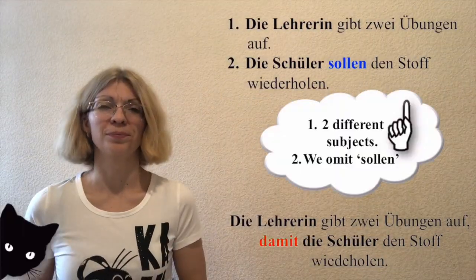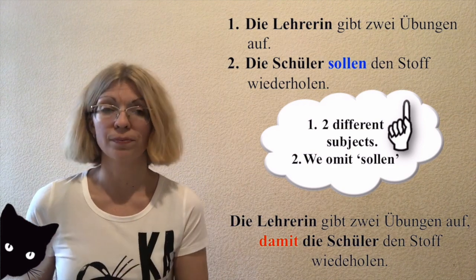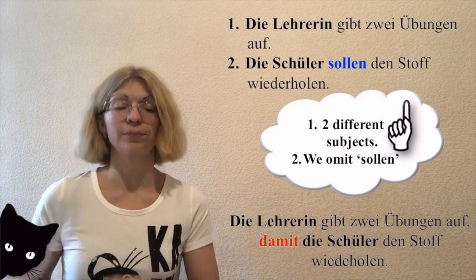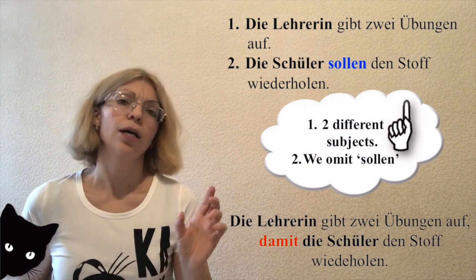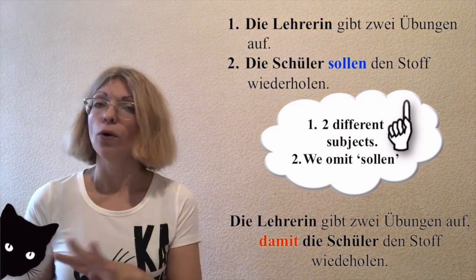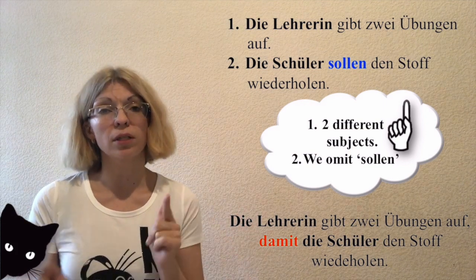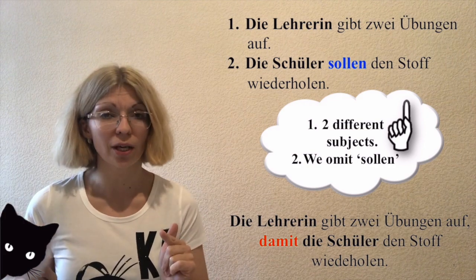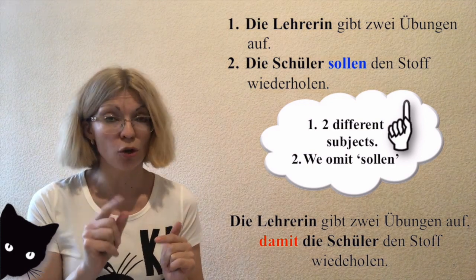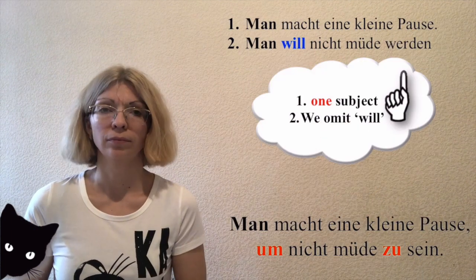Let's look at an example: 'Die Lehrerin gibt zwei Übungen auf. Die Schüler sollen den Stoff wiederholen.' There are two subjects — 'die Lehrerin' and 'die Schüler' — and they are different. There is also 'sollen' in the subordinate clause, but we can't use 'sollen' or 'wollen' with 'damit', so we omit it. Result: 'Die Lehrerin gibt zwei Übungen auf, damit die Schüler den Stoff wiederholen.'